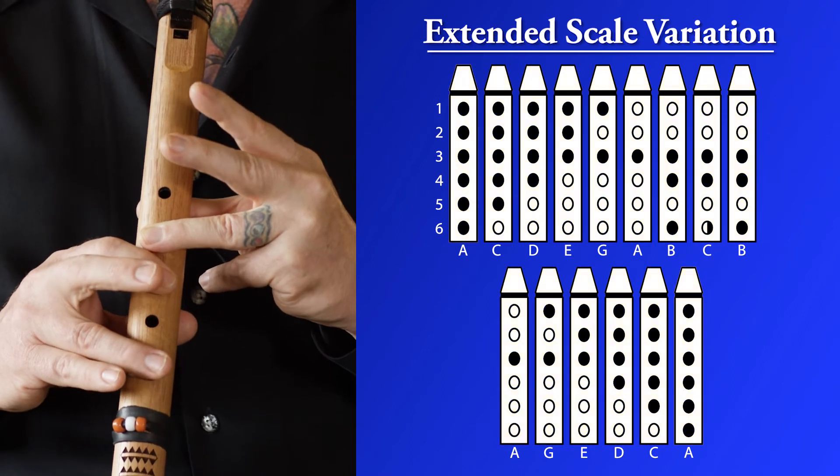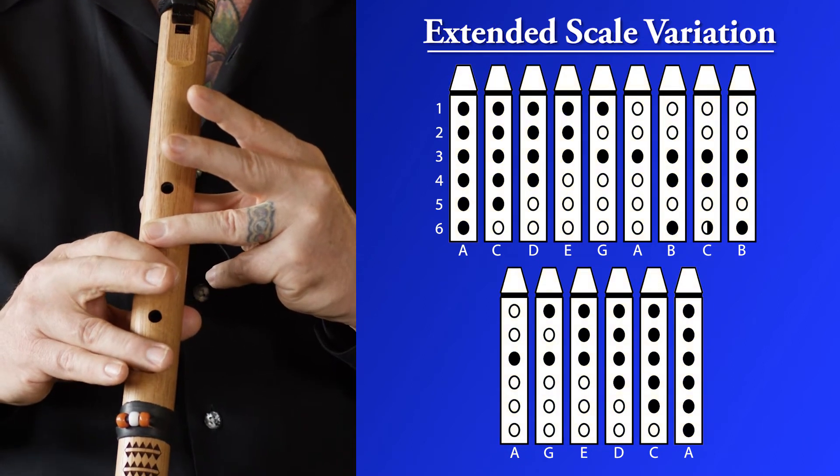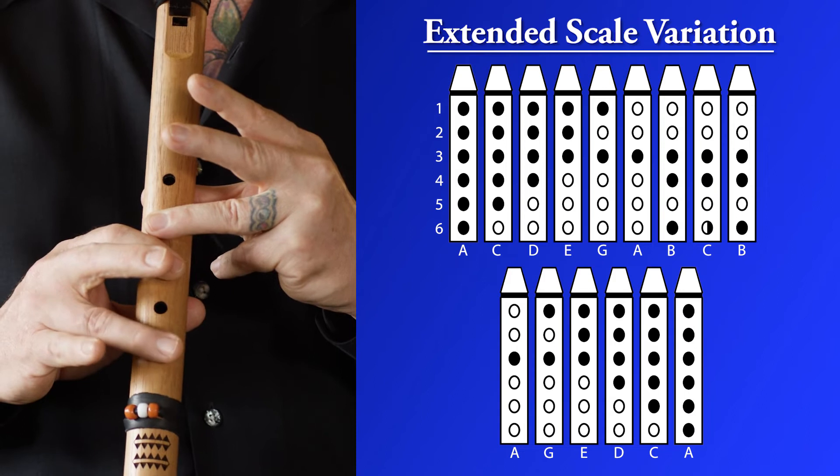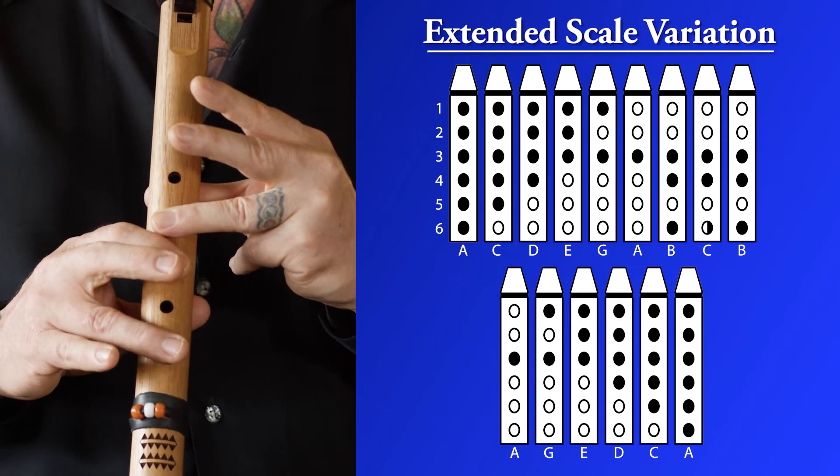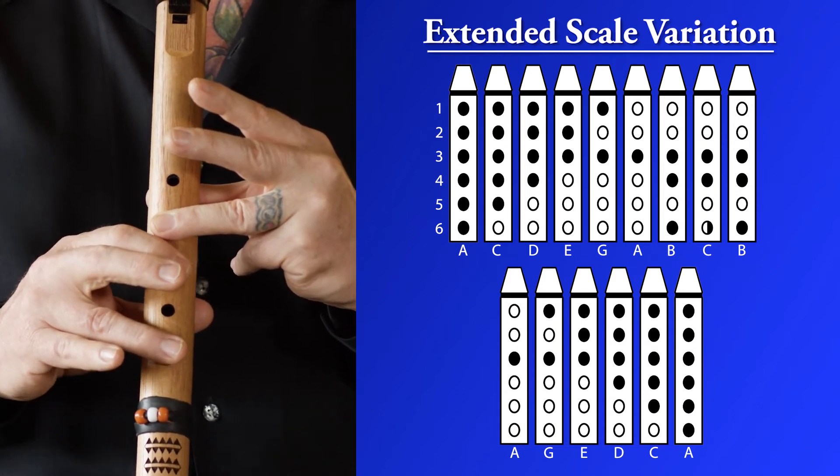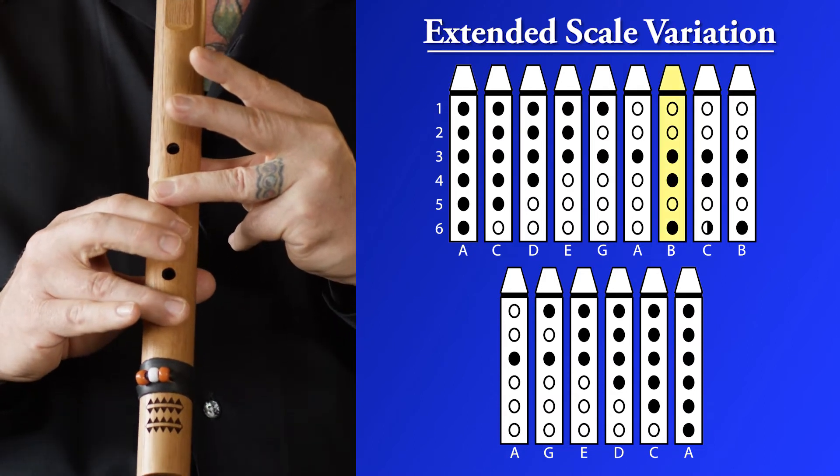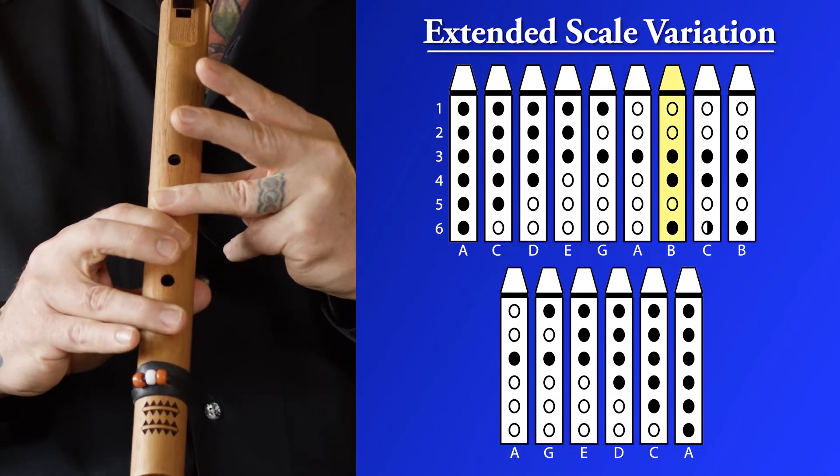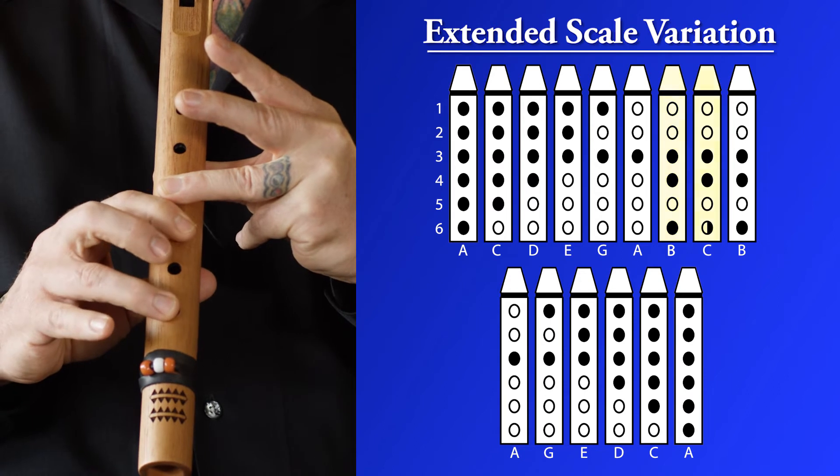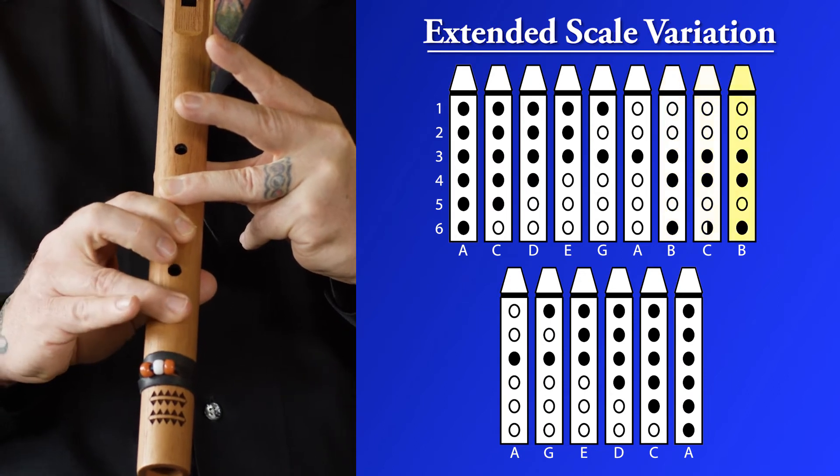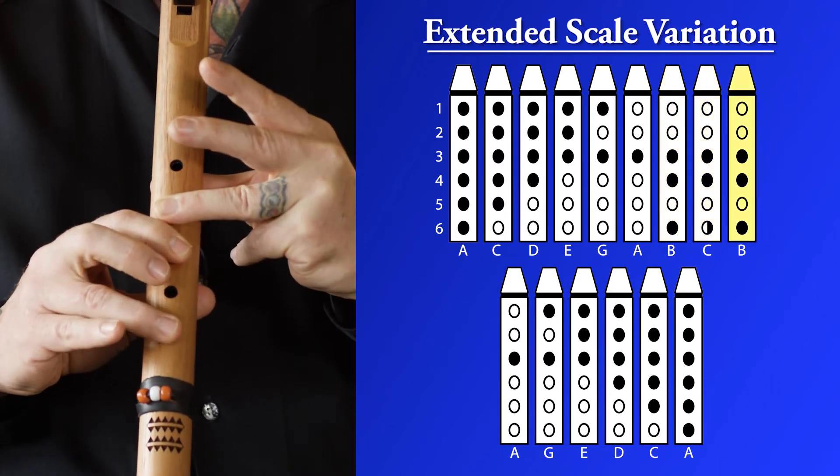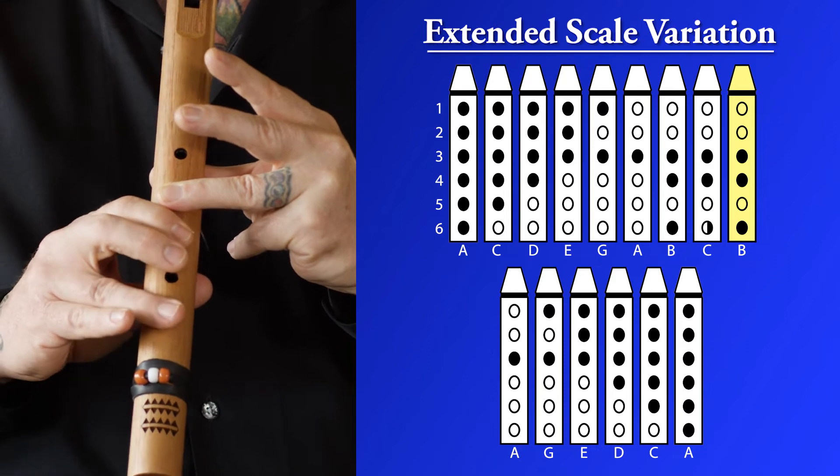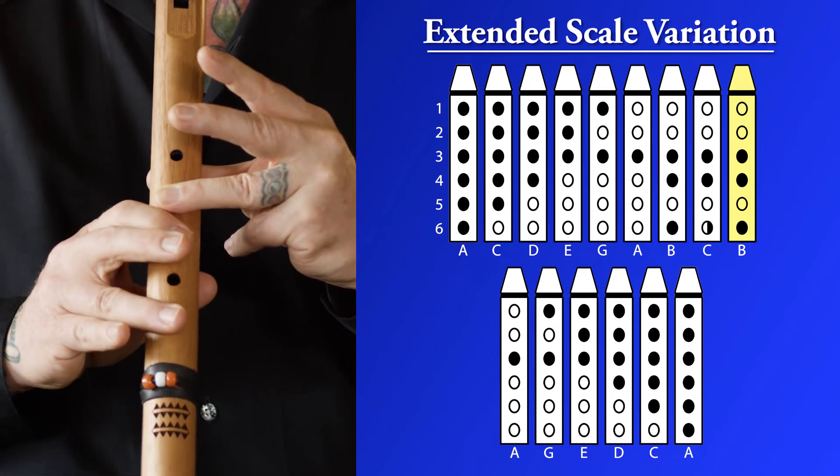Let's look a little more closely at that half note now. Pay attention to hole number six. When we make that half note, it's about a half. You can uncover it like this. By sliding your fingers sideways, or you can bend it, and I prefer to bend it and uncover about half.